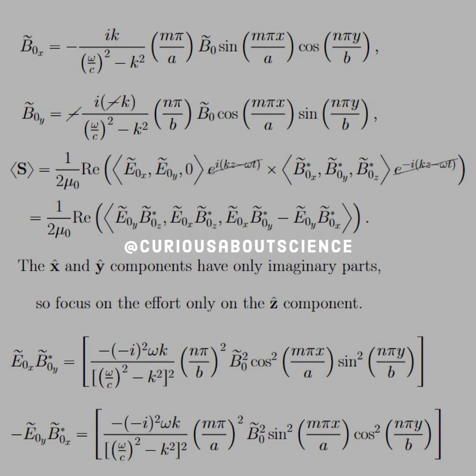Okay, so cool. So what we have here is E naught X, B naught Y star. We need to multiply them together.